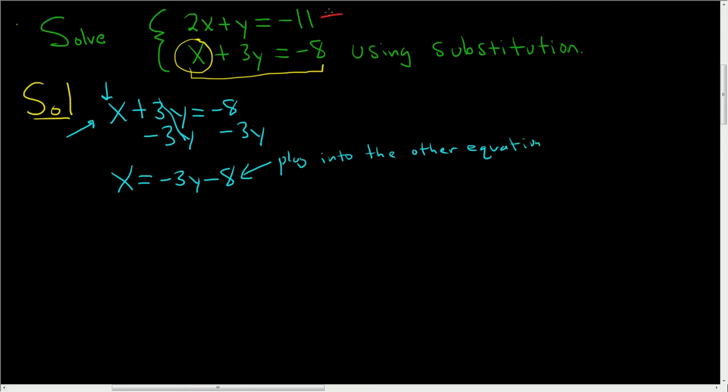I'm going to write this down again. So 2x plus y equals negative 11.